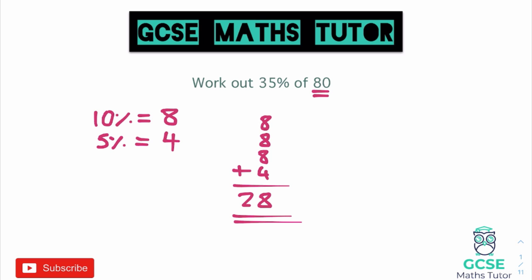Work out 10% and then think about whether you need the 5% as well — for these questions we're going to be using that 5% — and then just build up to the percentage in the question. So that's our 35%; let's have a look at another one.